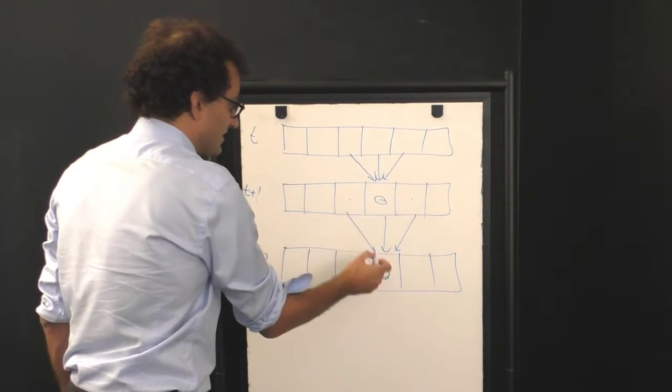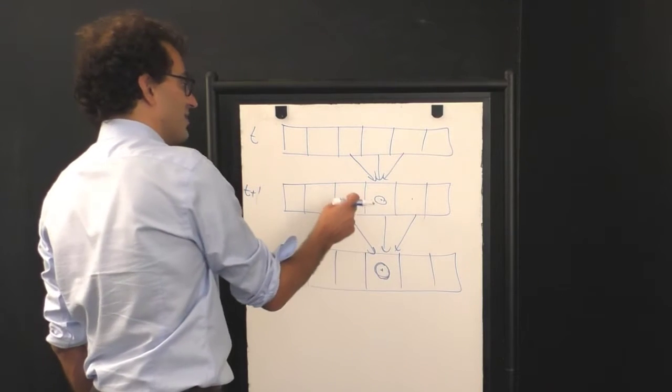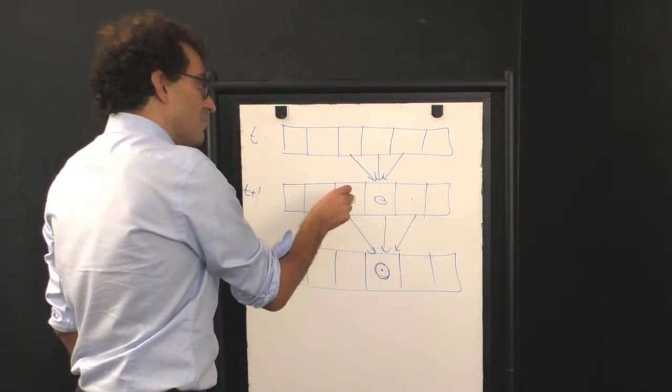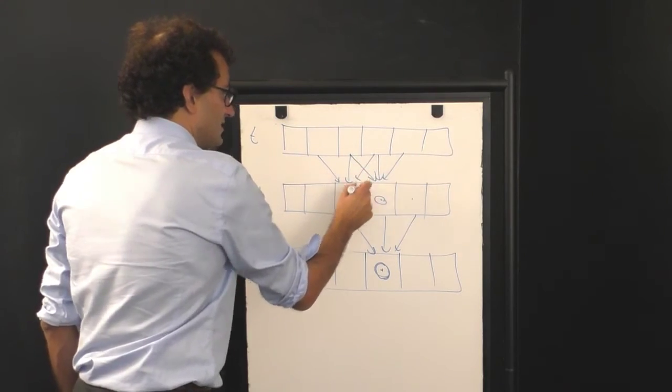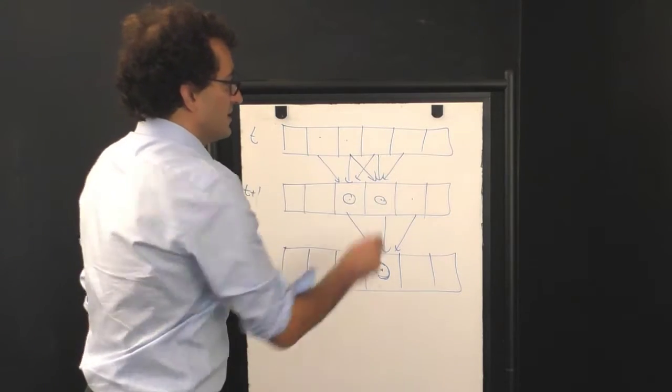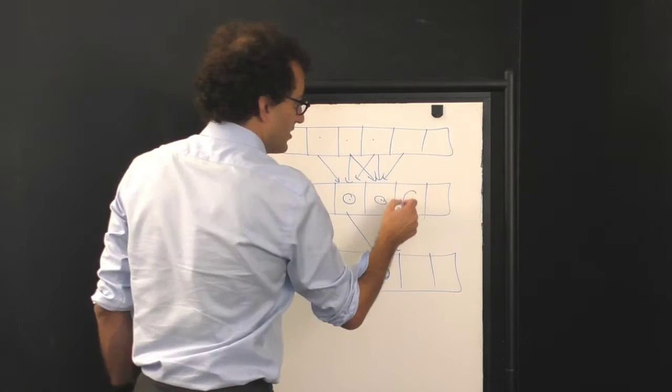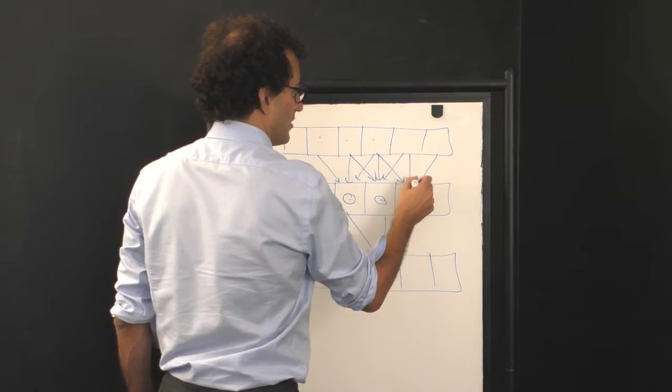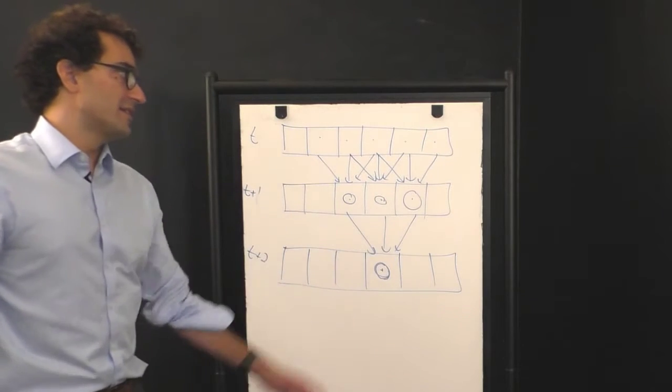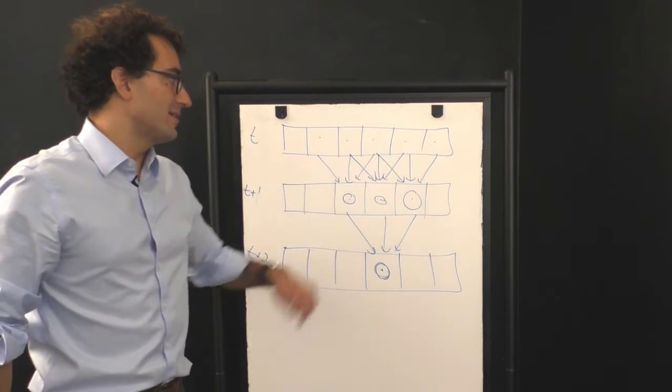Because as you go further back in time, in order to know the state of this point here, you have to know the state of this point here. But in order to know the state of this point here, you have to know the state of the system at these three points here. And similarly to know the state of the system at this point here, you have to know the state of the system here and here as well.